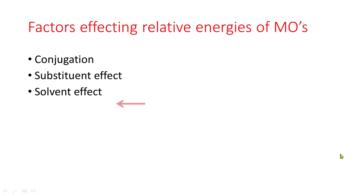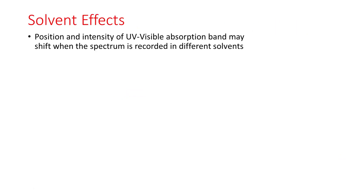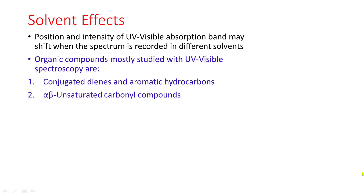In this session, we will discuss solvent effect. The position and intensity of UV-visible absorption bands may shift when the spectrum is recorded in different solvents. Organic compounds mostly studied with UV-visible spectroscopy are conjugated dienes, aromatic hydrocarbons, and alpha-beta unsaturated carbonyl compounds.